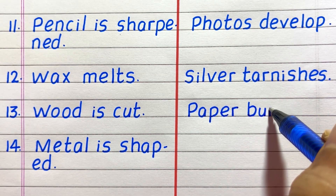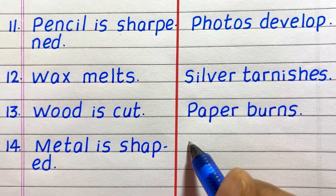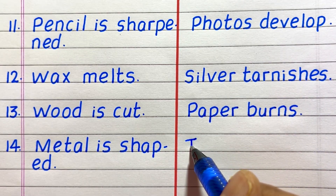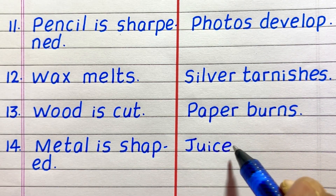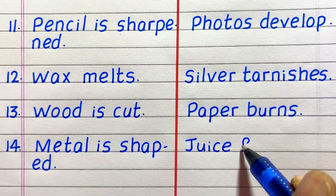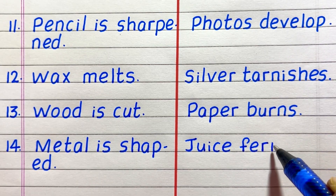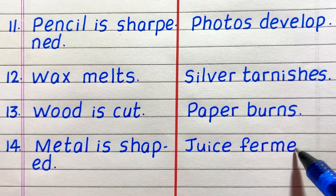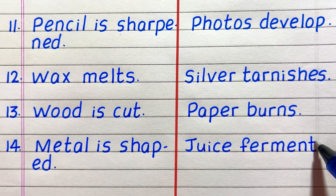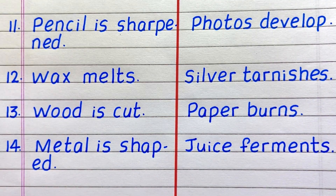Thirteenth example of a chemical change is paper burns. Fourteenth, juice ferments.